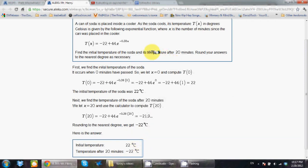Now let's find the temperature after 20 minutes. Now x is equal to 20 and we have to compute T when x is equal to 20. So we're going to replace all the x with 20, negative 22 plus this.